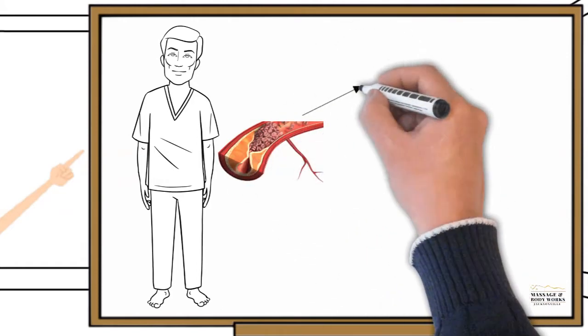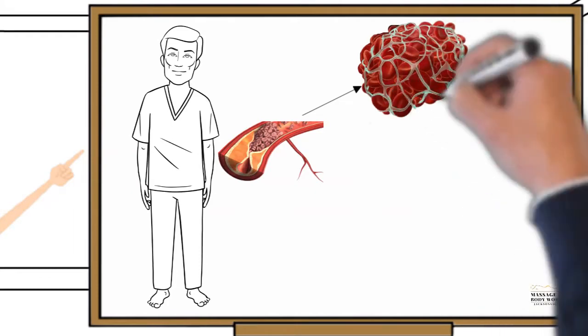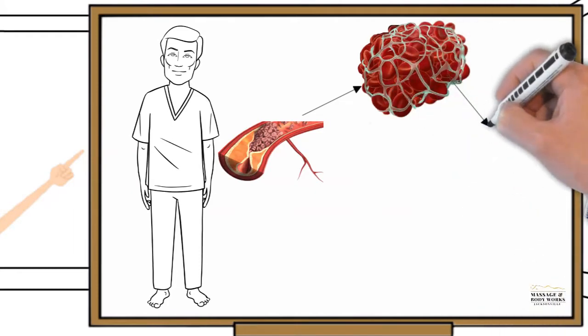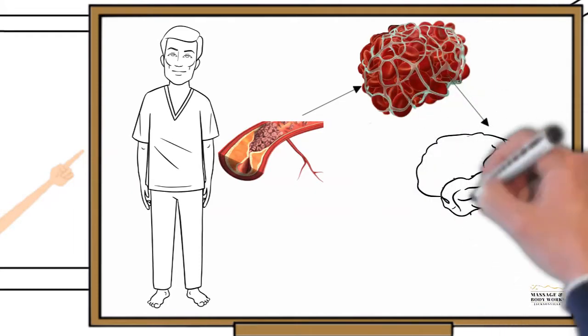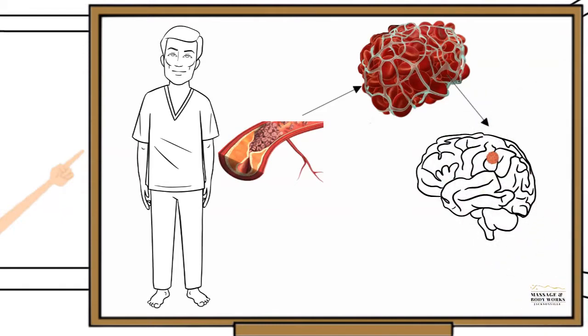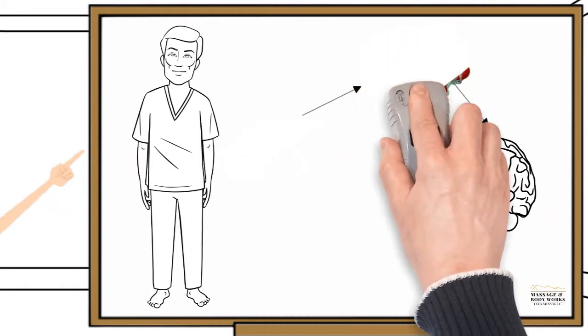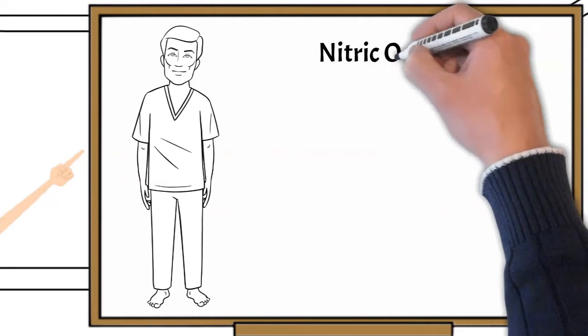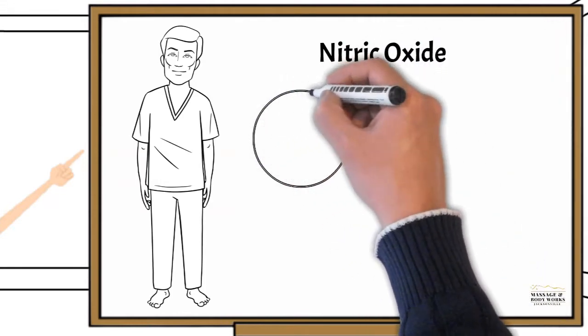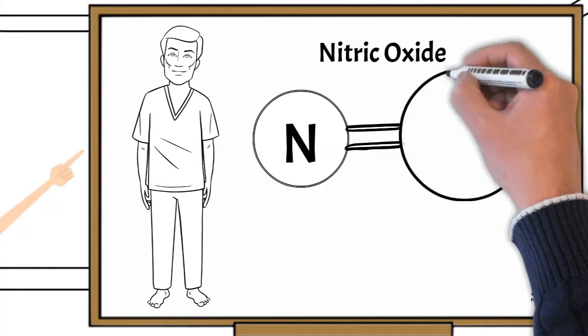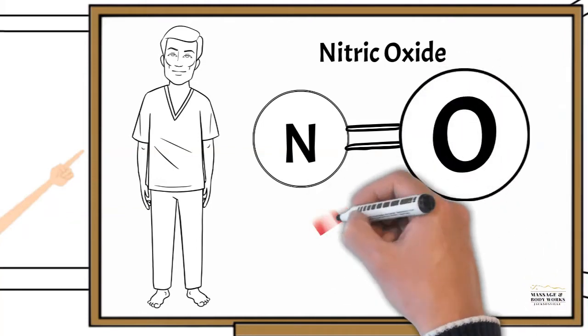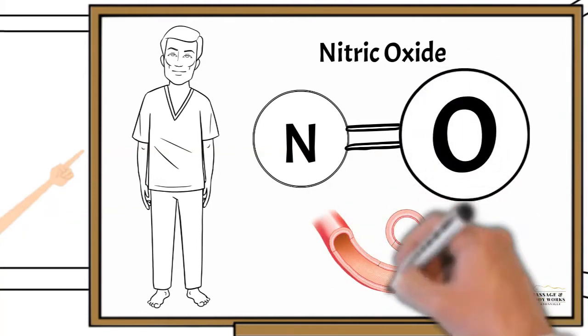High homocysteine can also cause your blood to have a higher than normal tendency to clot, which increases your risk of developing a dangerous clot that could lead to a stroke. High homocysteine is known to significantly lower nitric oxide in your blood. Nitric oxide is a gas that is critical to maintaining healthy and flexible arterial walls.